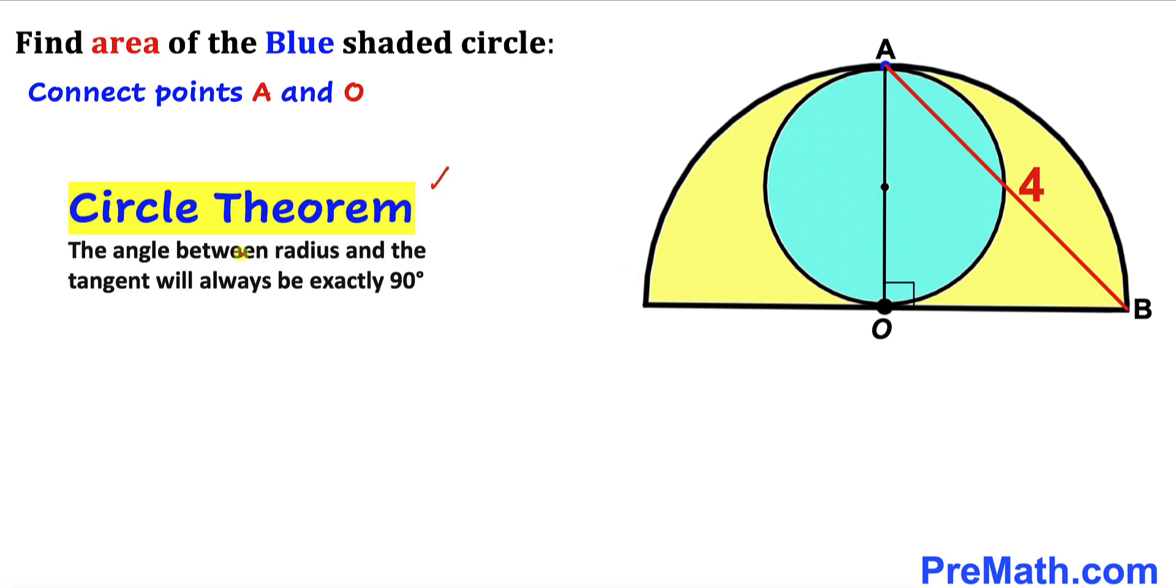Now let's recall the circle theorem. According to this theorem, the angle between the radius and the tangent will always be exactly 90 degrees.